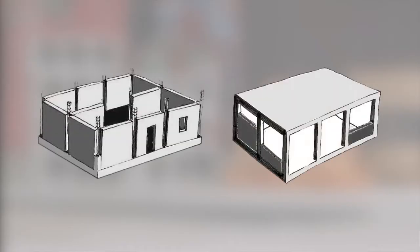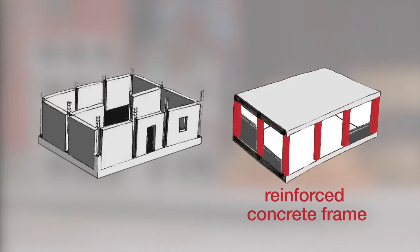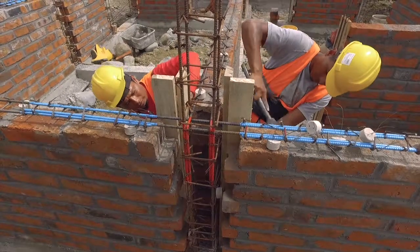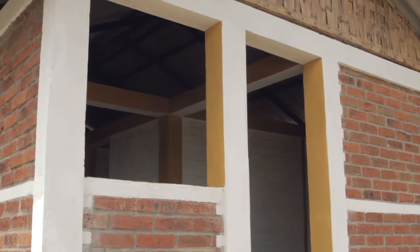The main difference is that in reinforced concrete frame construction, columns and beams are built before the block or brick walls. In confined masonry, however, walls are built first and then confined by concrete tie elements, namely tie beams, tie columns, sill band and opening reinforcements.